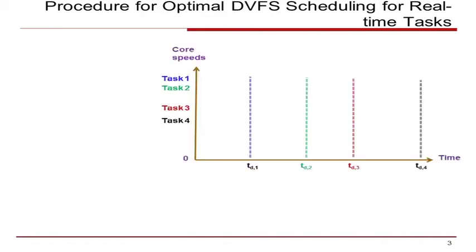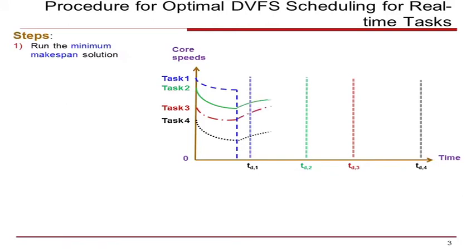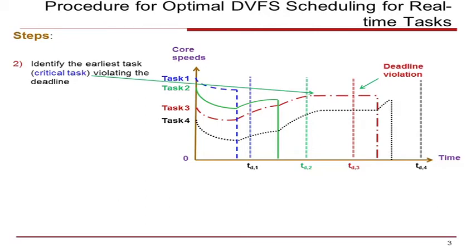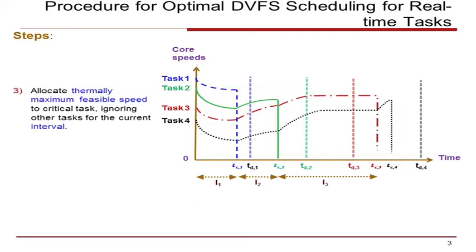Consider an example of a four core processor executing four tasks with deadlines as shown. Run the minimum makespan solution. Identify the task with the earliest deadline. Call it the critical task. Identify the intervals I, which are defined between completion of tasks. Allocate the maximum thermally feasible speed to the critical task such that it can finish its execution in its current interval.